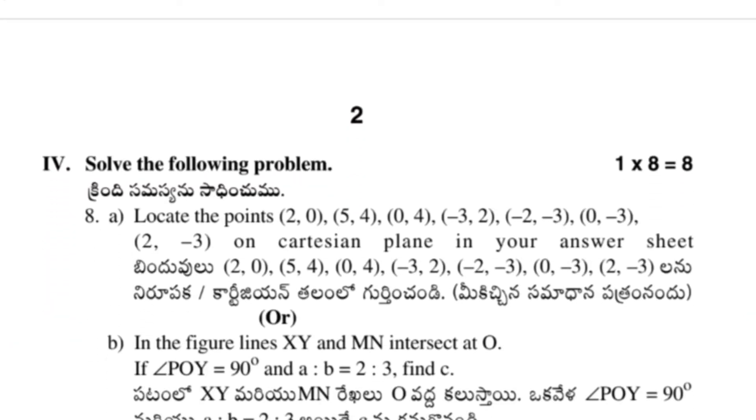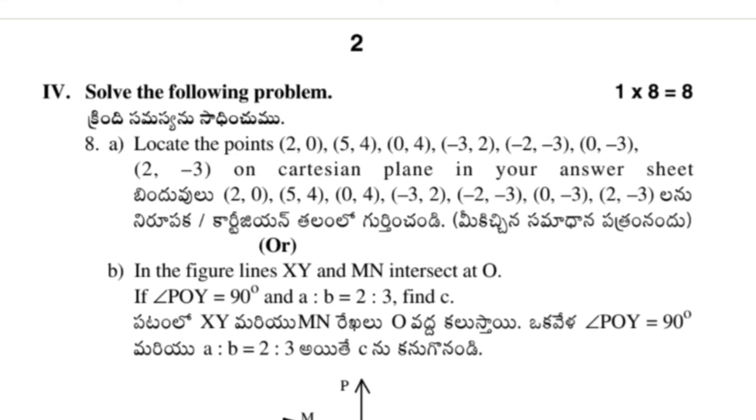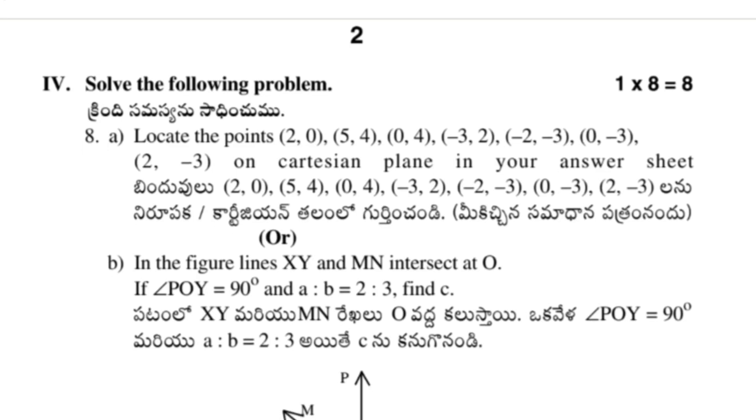Then the fourth section. We have solve the following problems. Here we have a choice for the 8th question—we can pick anyone from that, either A or B. If 8th A seems easy for you, then you can go for 8th A, or you can go for 8th B.